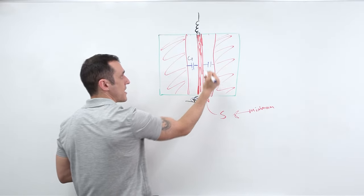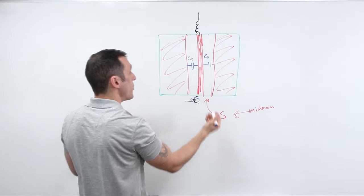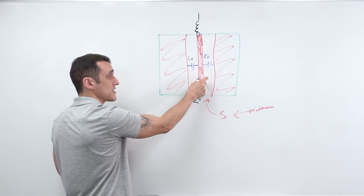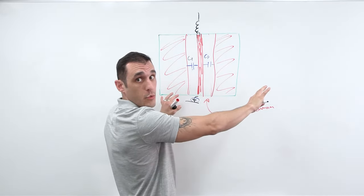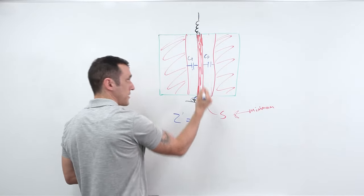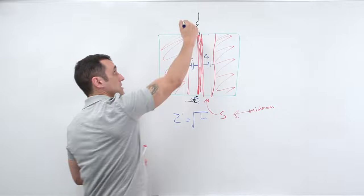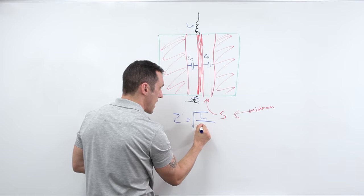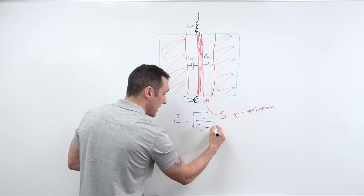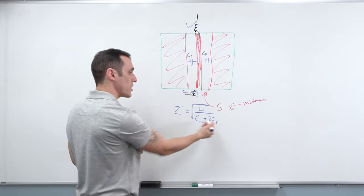If the spacing on each side is equal, then each parasitic capacitance will be equal. Ignoring fringing fields, this simple example shows why getting this spacing too close is not a good thing if you want the trace to maintain its impedance. My new impedance Z prime with this spacing is equal to the square root of L sub zero divided by C sub zero plus two times the parasitic capacitance, because the parasitic capacitance is effectively in parallel on both sides.